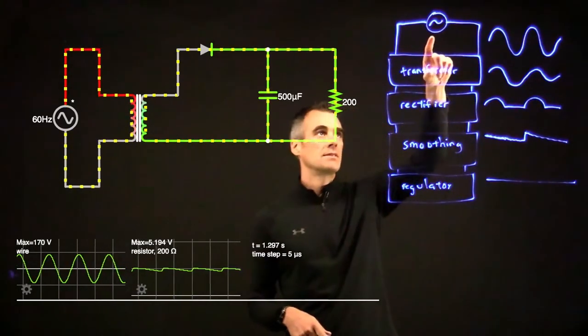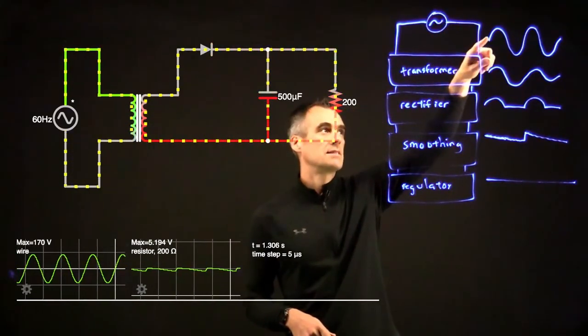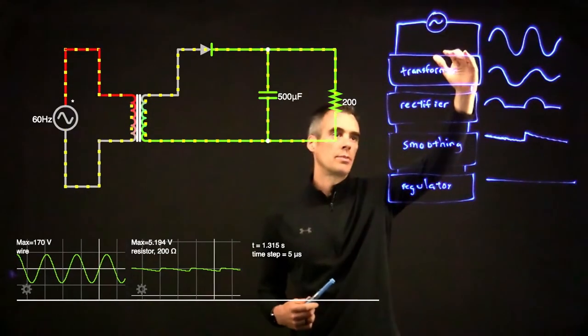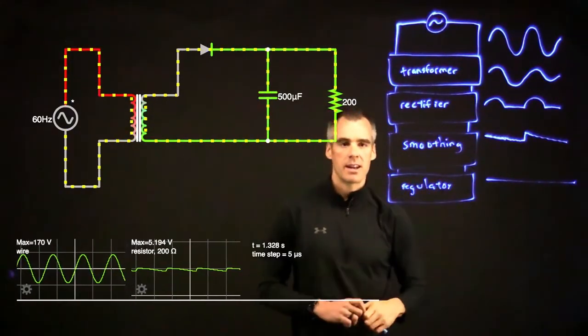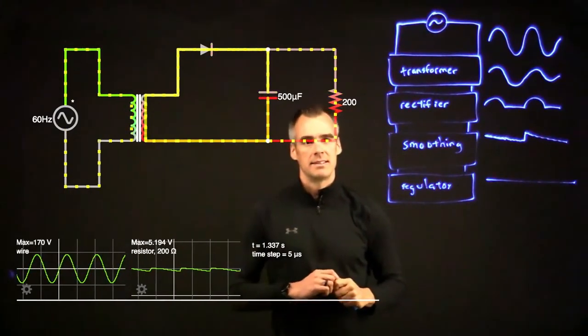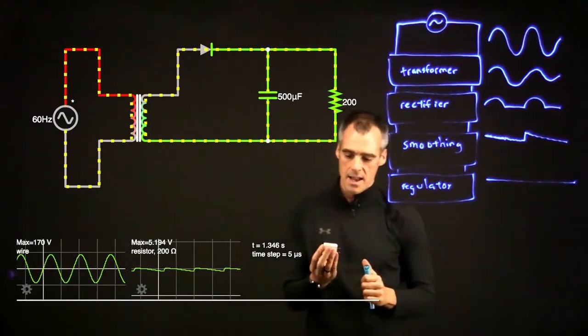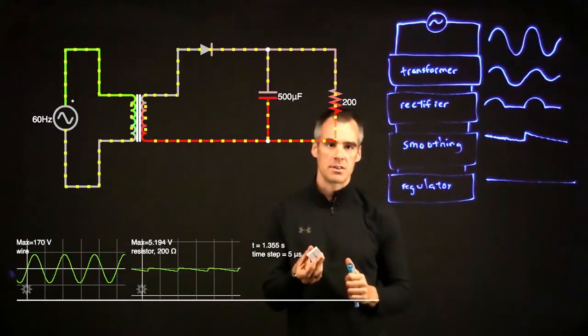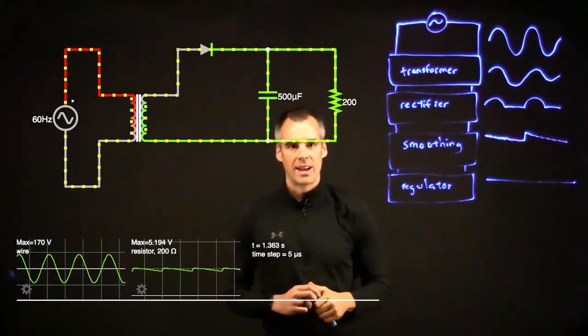So this is the basic process of how we start off with our AC signal at 120 volts RMS. We went through a bunch of steps, added a couple of components, and we get down to our flatlined 5 volts DC, just like is happening here in our USB charger. So hopefully that was helpful, and until next time, take care.